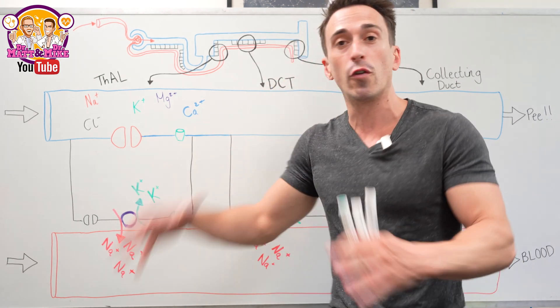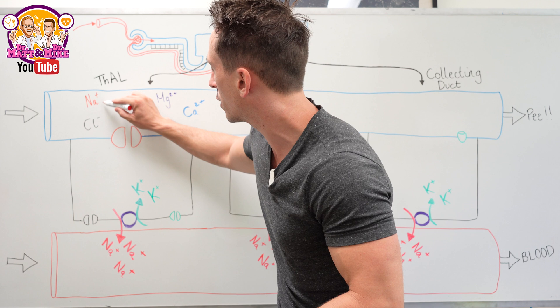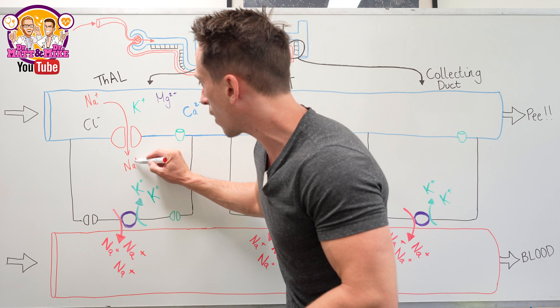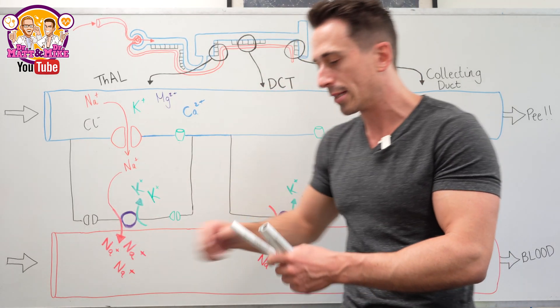What this means is this cell is void of sodium, so there is a concentration gradient for the sodium that's moving through the tubules. It wants to move into these cells, which is great because that sodium can then get thrown out in exchange for potassium into the blood.